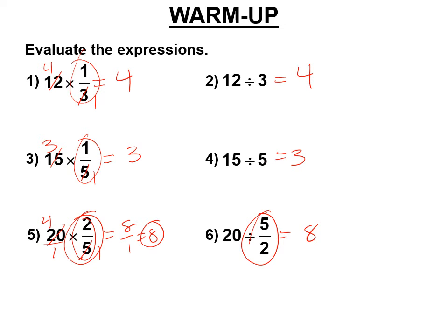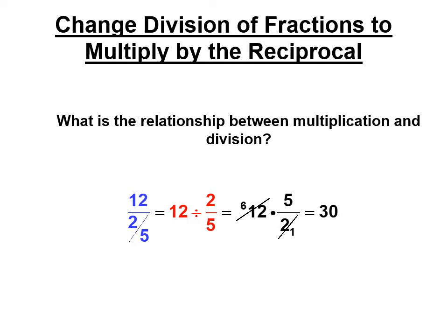And you can see 2 fifths flipped over here, 5 halves. But it's just like the ones above it. 5 flipped over is 1 fifth. So hence, we don't divide fractions. By the way, this is 12 divided by 2 fifths. I talked about the fact that you can have a fraction and a fraction. 12 divided by 2 fifths is the same as 12 times the fraction flipped over, 5 halves.